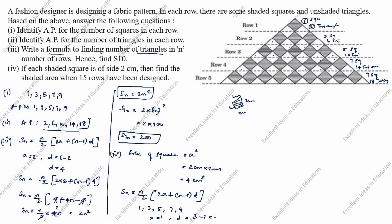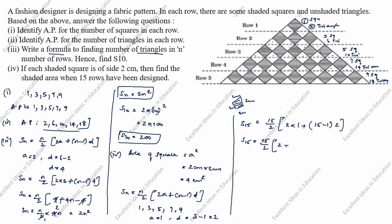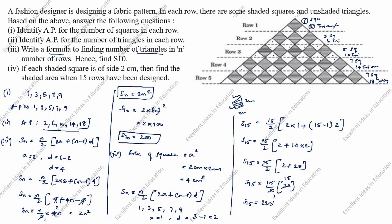S15 = 15/2 × (2×1 + (15−1)×2) = 15/2 × (2 + 14×2) = 15/2 × (2 + 28) = 15/2 × 30 = 15 × 15 = 225.